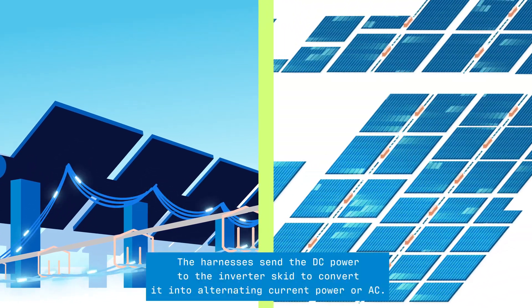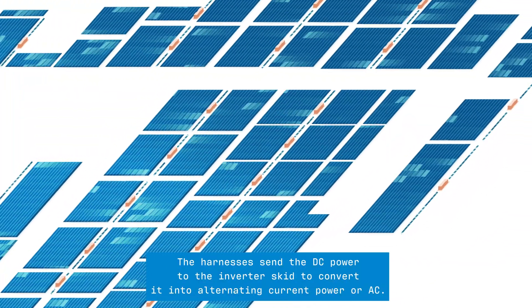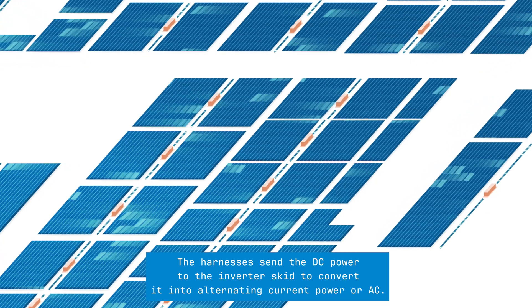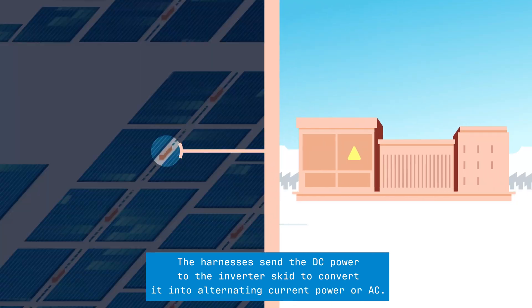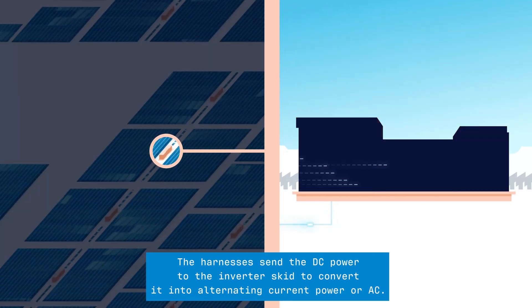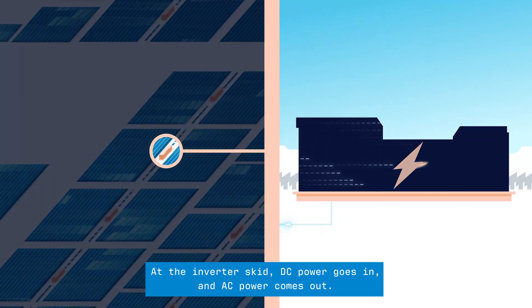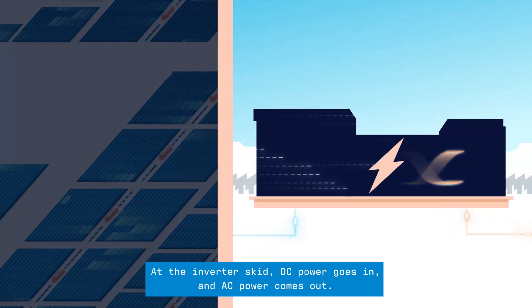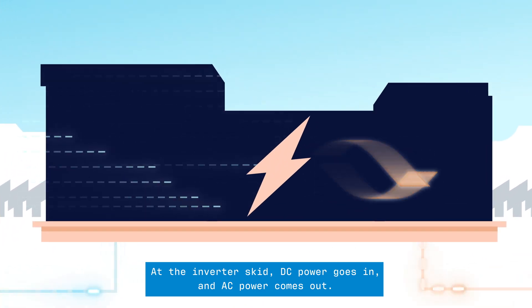The harnesses send the DC power to the inverter skid to convert it into alternating current power, or AC. At the inverter skid, DC power goes in and AC power comes out.